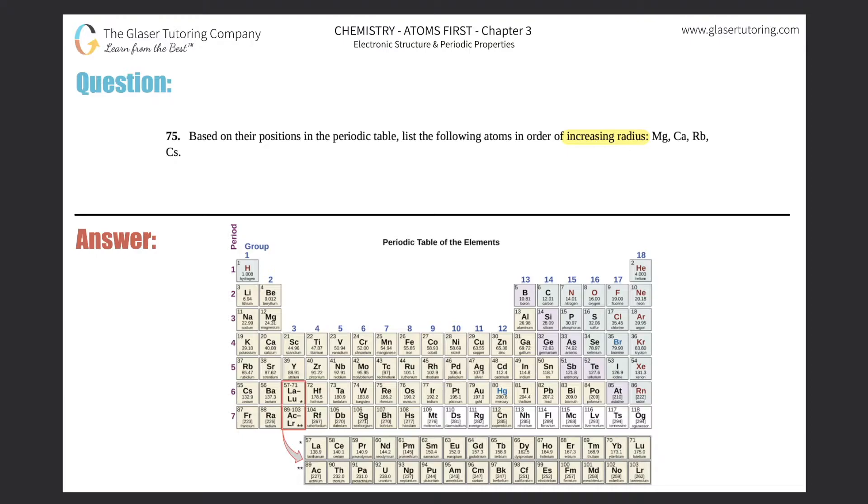Radius is just talking about how big or how small an atom is. We want to rank them from increasing radius, which means the smallest radius should be on the left-hand side and the largest radius is going to be on the right-hand side.